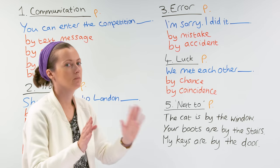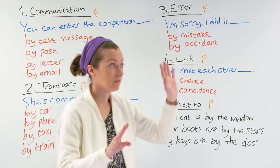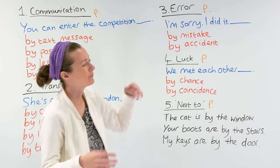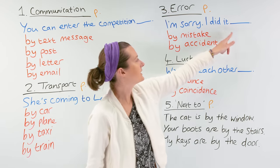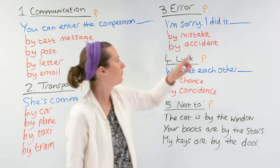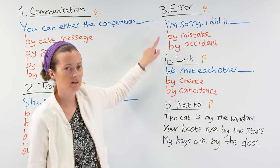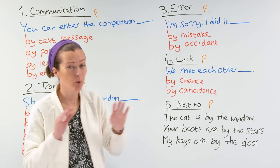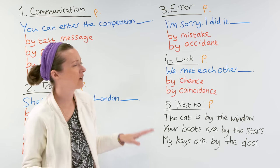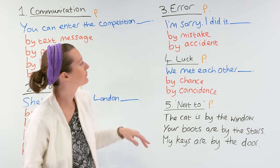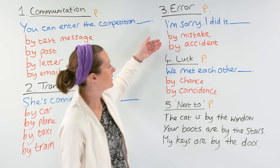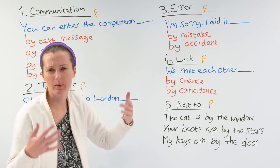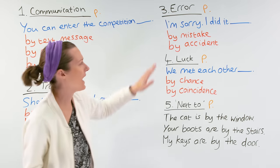Error means this is wrong — a mistake. I'm sorry, I did it by mistake. I did it by accident. Oops, I did it by accident. I'm sorry. These are the only two examples you need to remember for this category: by mistake and by accident.